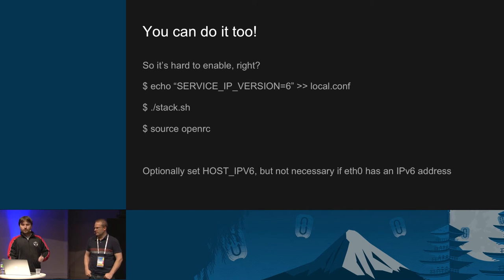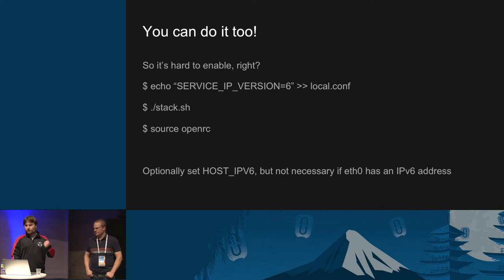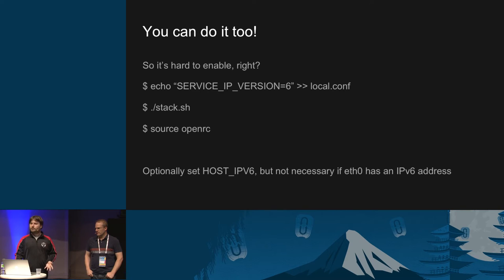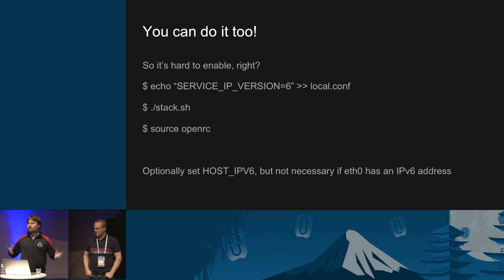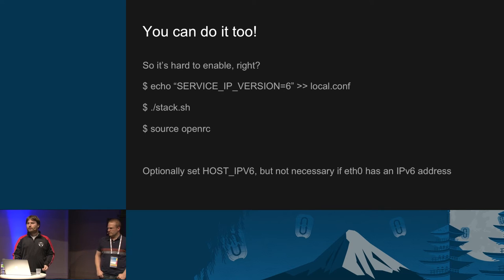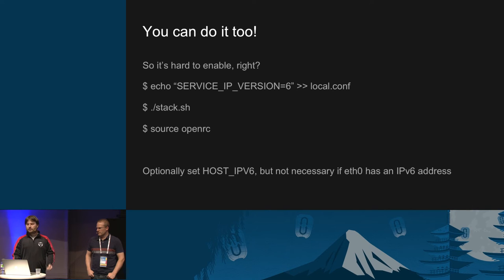So if you're interested in doing this, how do you get to the point where we are — deploying IPv6 within a DevStack context? You just set service IP version equal to six in your local.conf file and then run your DevStack stack script, which will create the cluster and install all the services. The source OpenRC line is just to load in your credentials so that when you use the command line clients, you have your credentials set and can do further operations like booting a virtual machine onto an IPv6-only network.